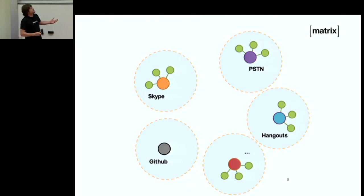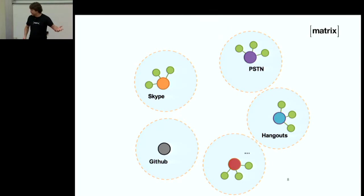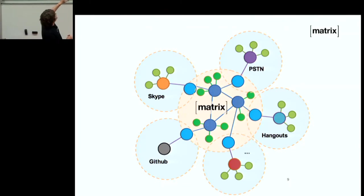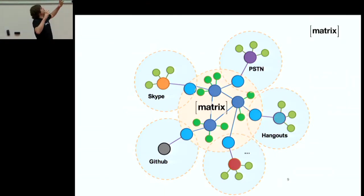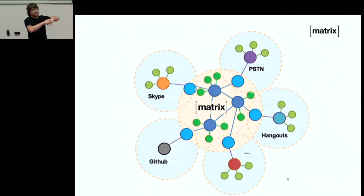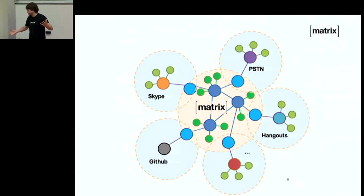Let's look at some of these silos — classic ones are Skype, the phone network itself, Hangouts, GitHub. Matrix exists literally in the middle to go and try to glue them together. You have a mesh network of servers, which are the dark blue dots, which have native Matrix clients connected to them — the green dots. You then have the light blue dots, which are bridges through to other systems. We have bridges to all of those and a lot more.